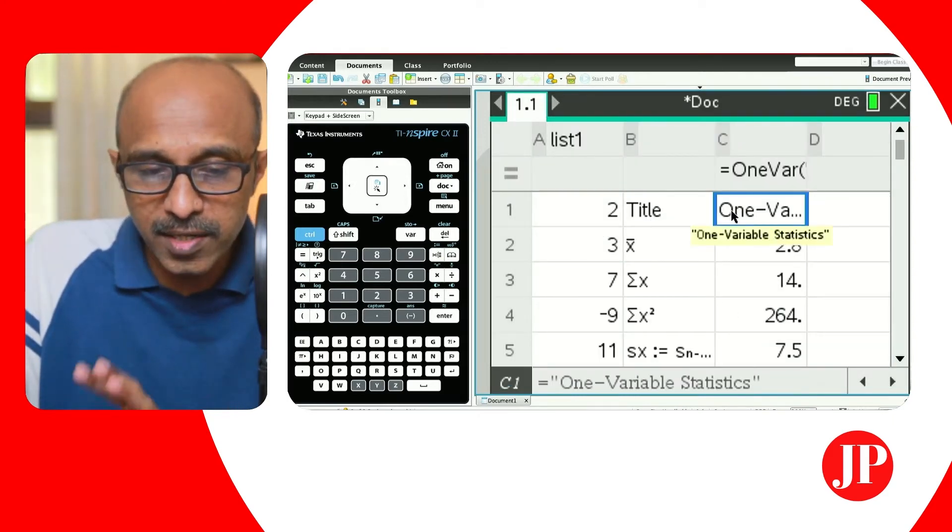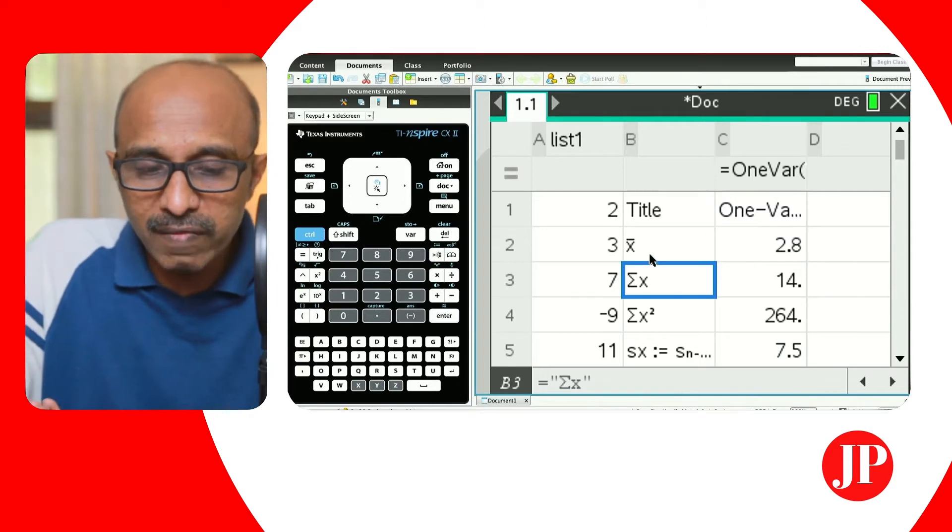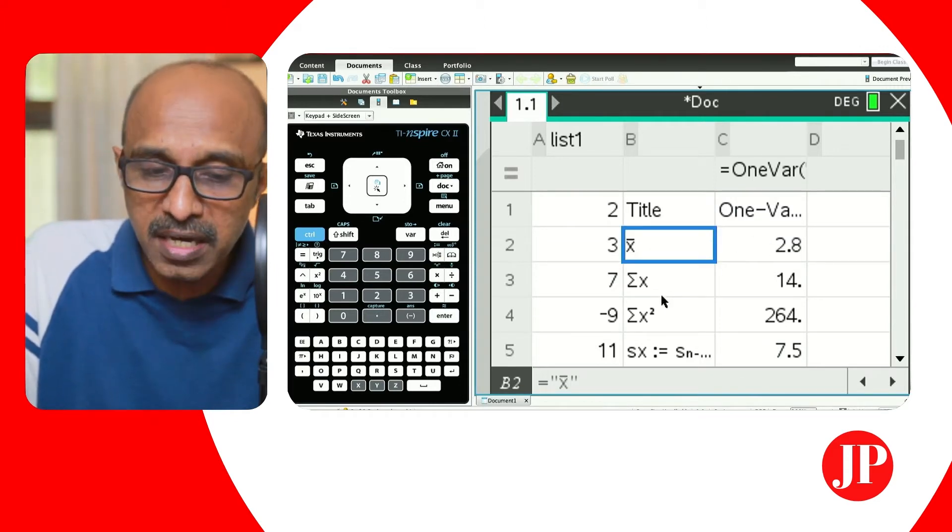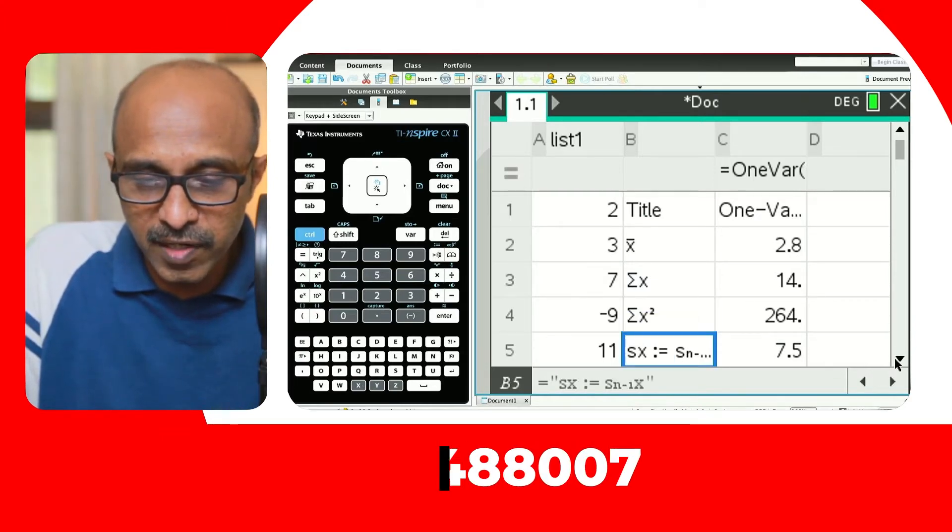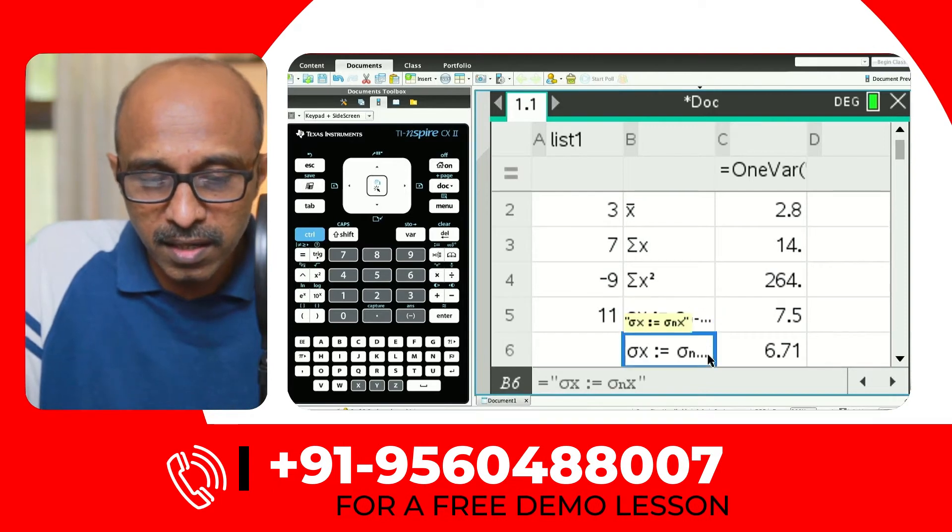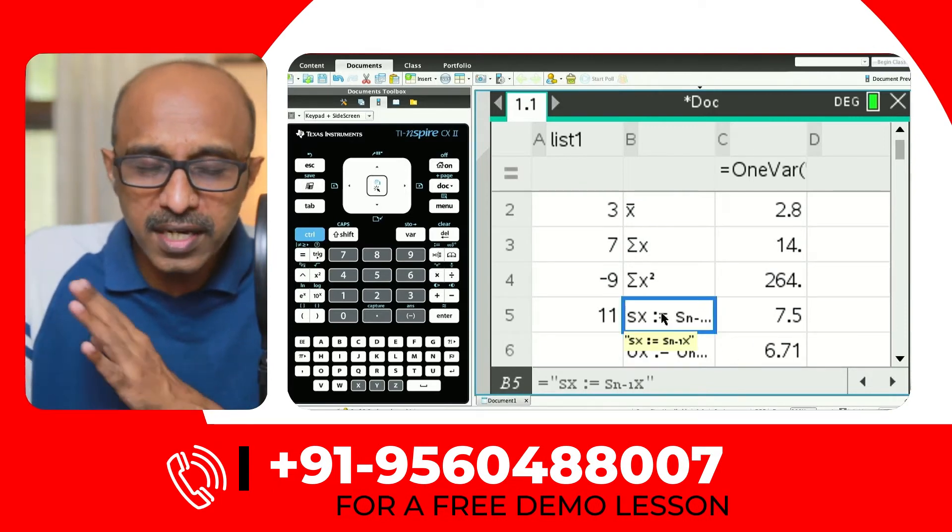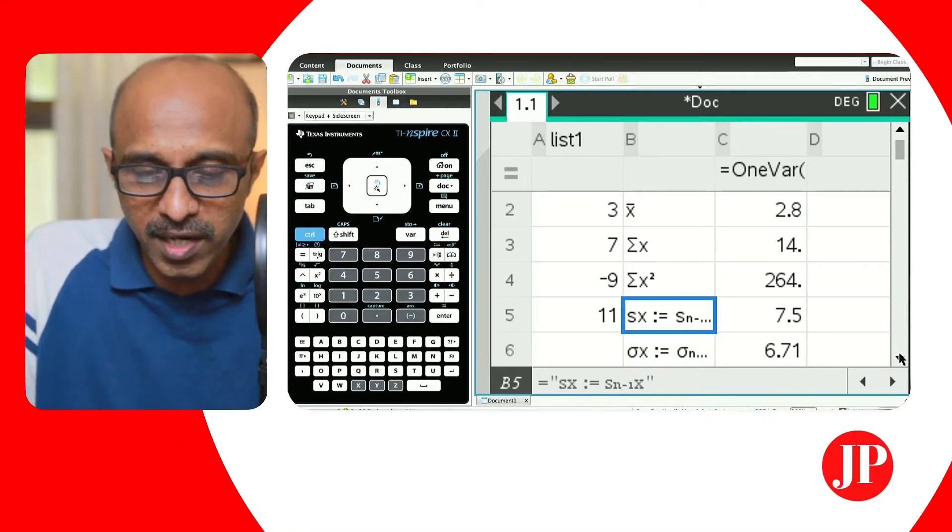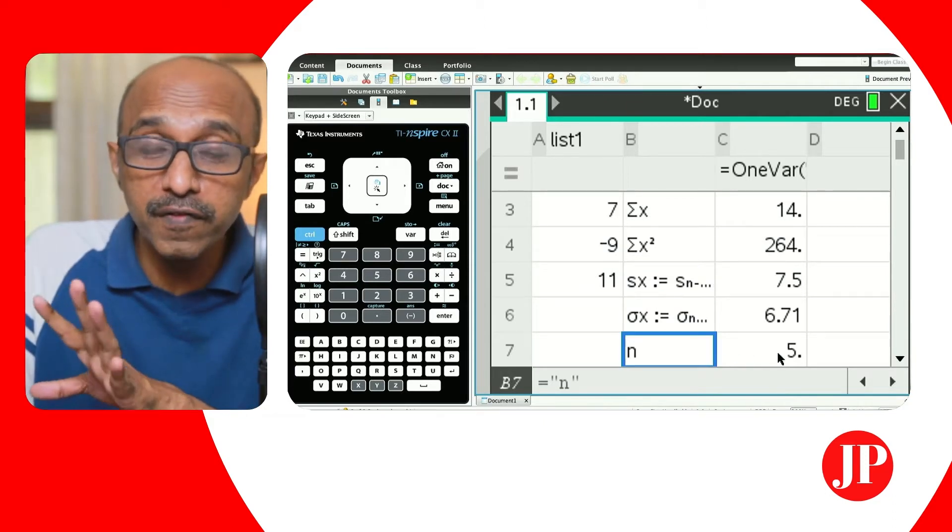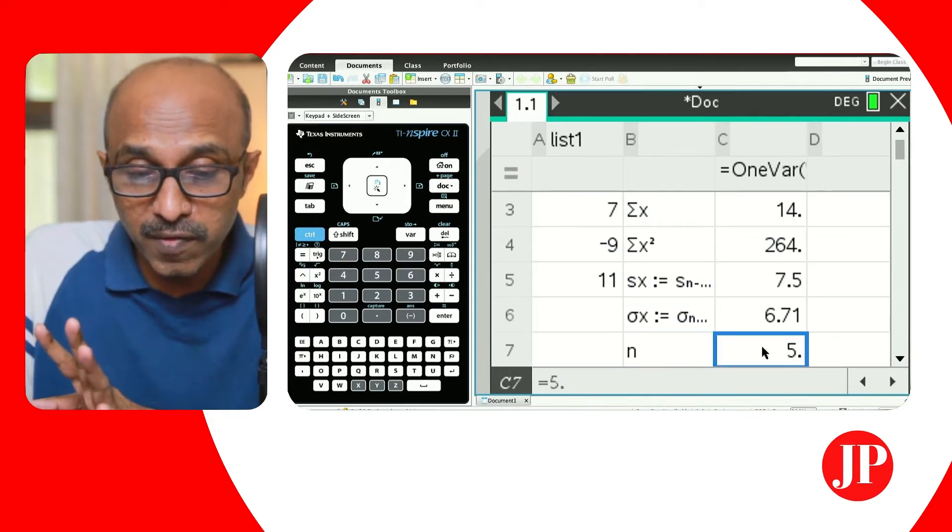So the title is the name and it says one variable statistics. You've got all your one variable statistics. You've got X bar, which is the mean, sigma X and sigma X square. The sum of all the data items. And SX is the standard deviation. The sample standard deviation. This is the sigma X is the population standard deviation. Mostly with calculator options, we use SX because the degree of freedom, you've got N minus one.